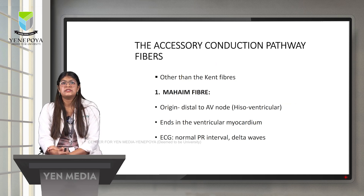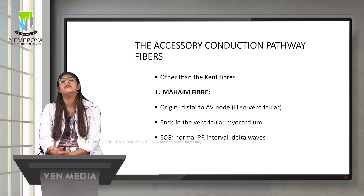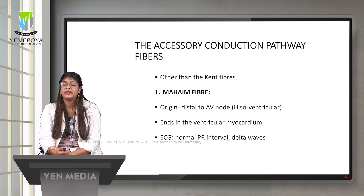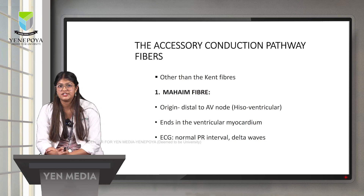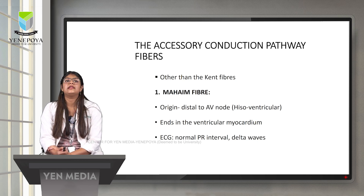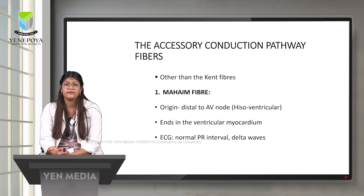Other accessory conduction pathway fibers besides the bundle of Kent include Mahaim fibers. The origin of Mahaim fibers is just distal to the AV node, situated between the bundle of His and the ventricles — hence termed hiso-ventricular — ending in the ventricular myocardium. Because Mahaim fibers do not bypass the AV node, the ECG shows a normal PR interval.